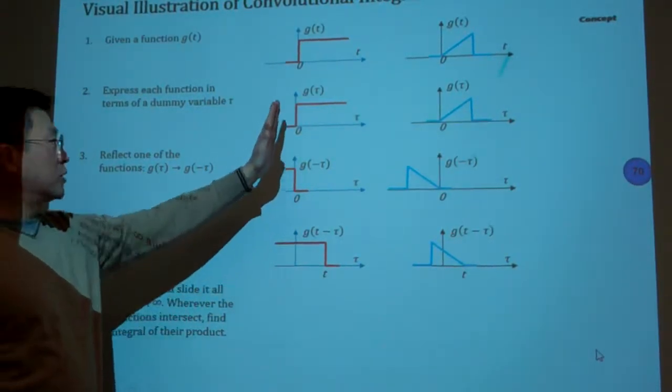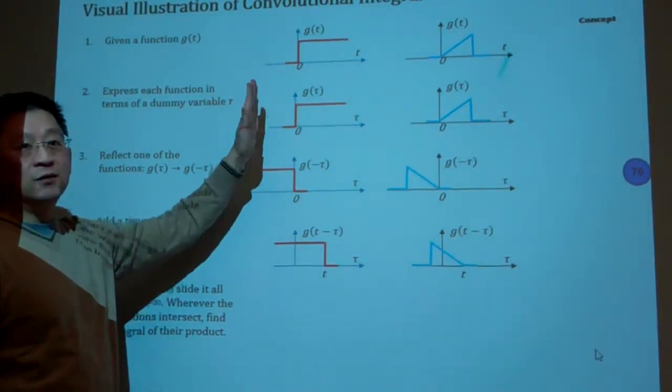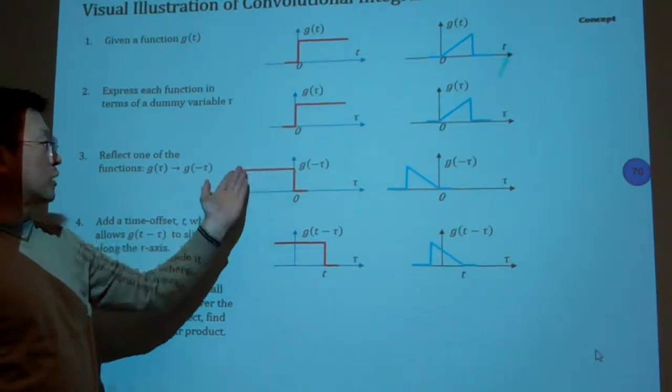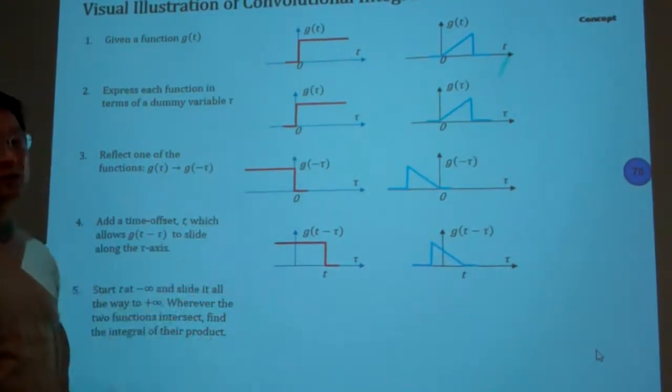In graphically, you simply, with respect to the time, you simply reflect horizontally. So basically this is the horizontal reflection of this curve to here. And that corresponding is this one.